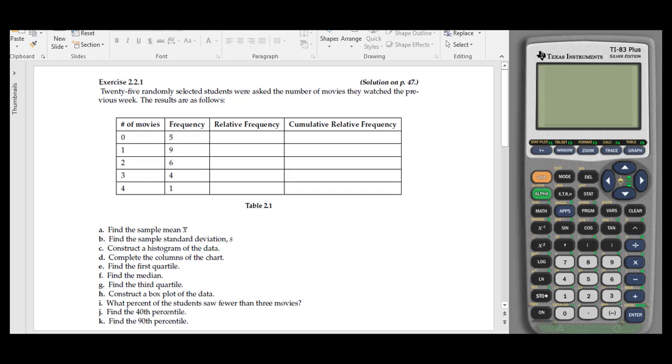OK, so exercise 2.21, they're asking us to find information for relative frequencies, cumulative frequencies, and other descriptive statistics based on an example of 25 randomly selected students and how many movies they watched the previous week.